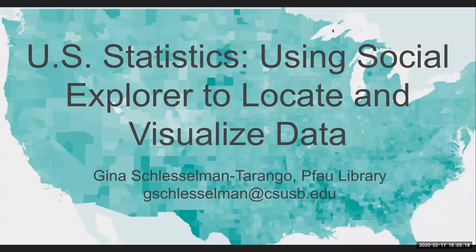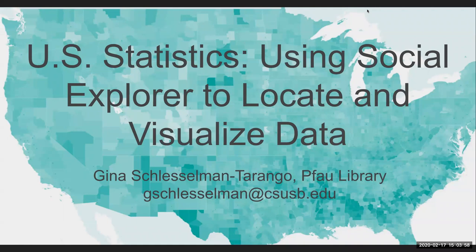Social Explorer contains about 220 years of U.S. demographic data. It's essentially a digital tool that allows you to access this data, which also includes economic data, health data, religion, crime data, etc., in both visual and traditional report format. It includes U.S. Census data back to 1790, as well as specialized sources like the FBI crime reports, election data, and more. There is some limited international data.